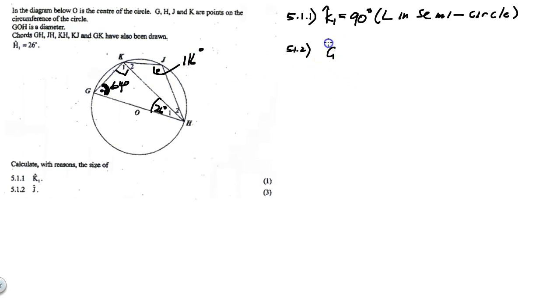So firstly, we'll say G is equal to 180 minus 90 plus 26 degrees, sum of angles of triangle, and that's equal to 64 degrees.